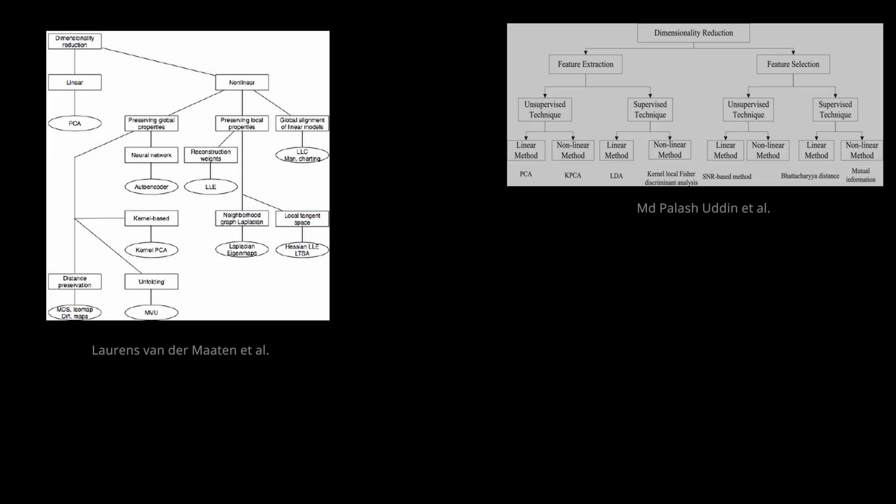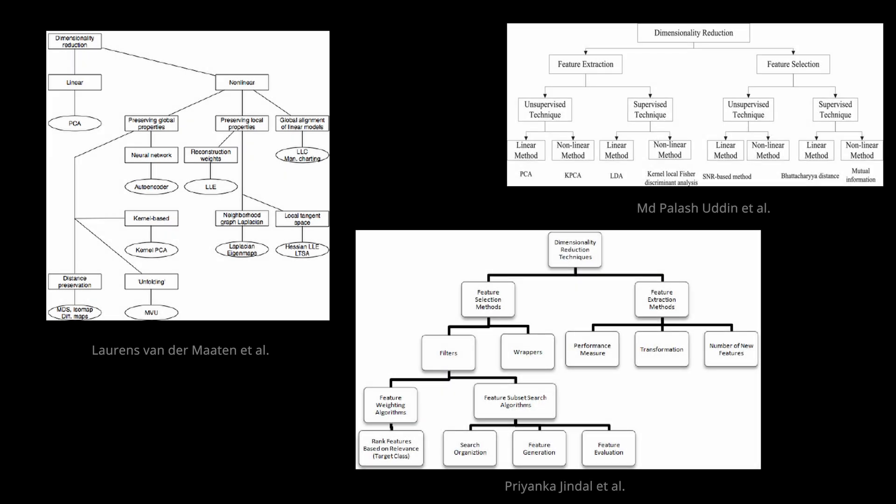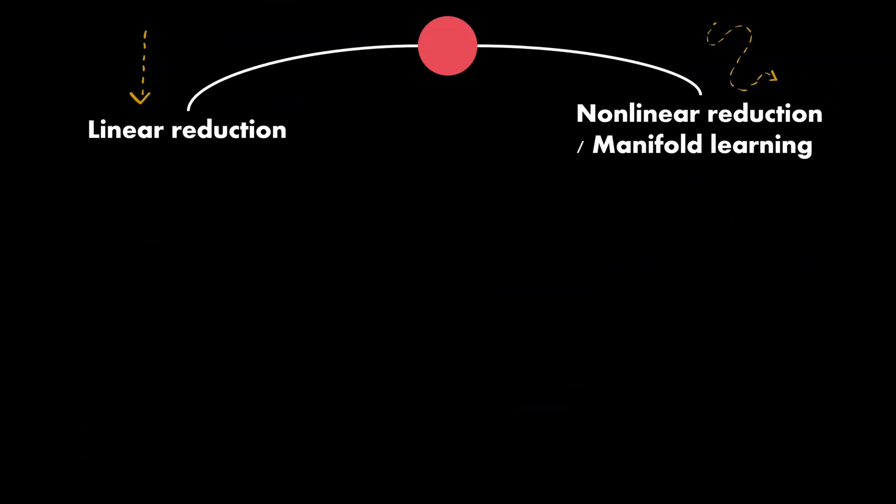To create these low-dimensional representations, we can choose from a variety of techniques which can be categorized in various ways. Here, we will just distinguish between linear methods and non-linear methods. Non-linear approaches belong to the field of manifold learning, which can be further divided into local and global techniques. Which means if they just look at the neighborhood, or if they consider the entire data set.